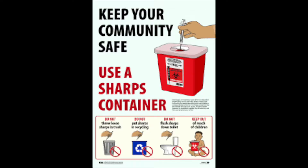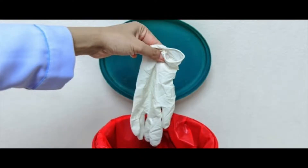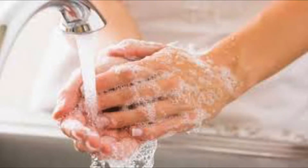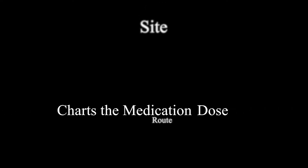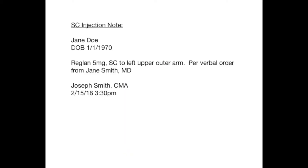The medical assistant safely discards the needle and syringe in a sharps container without recapping the needle. He or she then removes and disposes of gloves and appropriately washes and sanitizes hands. The medical assistant correctly charts the medication, dose, route, site, and patient response. For example: Ms. Jane Doe received Reglan 5 mg by sub-Q injection to left upper outer arm. It was uneventful and well tolerated. Joseph Smith, CMA, 2-15-2018, 3:30 p.m.